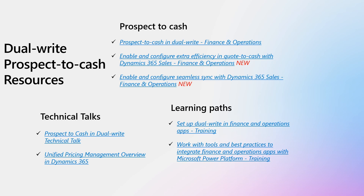Finally, some useful resources. A good starting point is the documentation on the prospect-to-cash enhancements and dual-write seamless sync — the docs explain the added value, the enablement steps, and note that seamless sync can be enabled on custom forms as well for quote, quote line, order, and order line. Another great learning resource is the FastTrack Technical Talks repository, with talks on topics such as prospect-to-cash or the Unified Pricing Management capabilities of F&O. There are also learning paths available to expand your knowledge on dual-write, including monitoring and troubleshooting techniques.